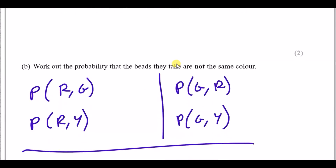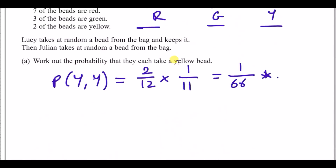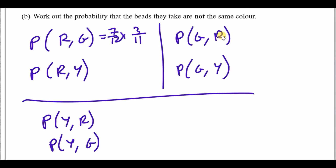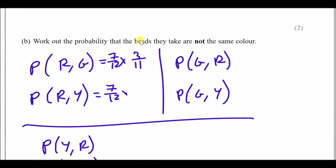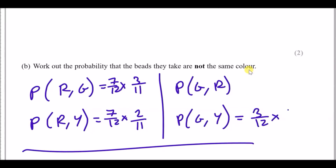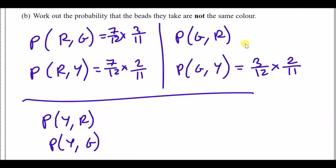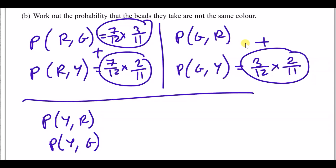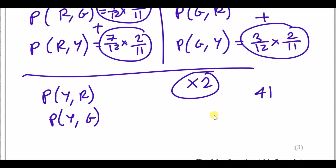For red and green: 7/12 times 3/11. For red and yellow: 7/12 times 2/11. For green and yellow: 3/12 times 2/11. Add up these three results in your calculator, then double the total to account for the reversed orders. When you do that you get a final probability of 41/66.